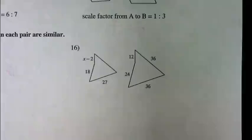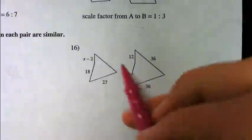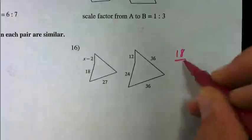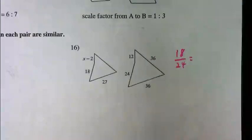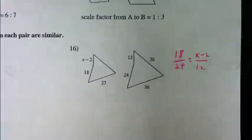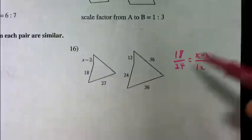Now, the numbers on this one are a little bit bigger. Remember, you could make them smaller by changing this into a scale factor. So, if you want to set it up as 18 over 24, let's say, and then do x minus 2 over 12, that would work.